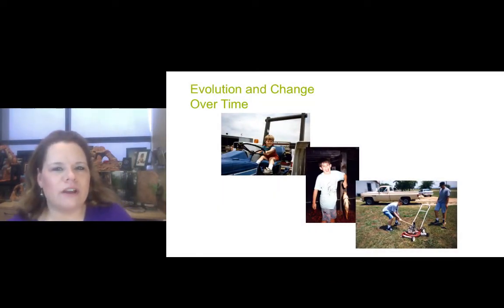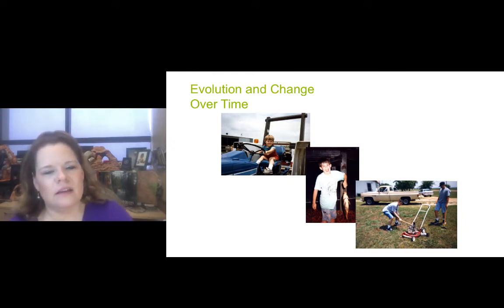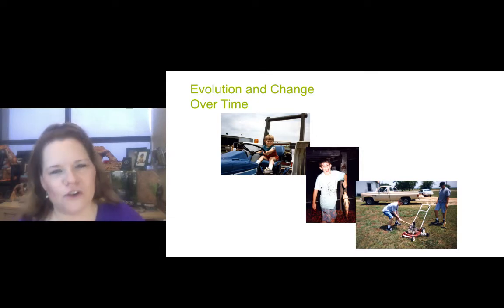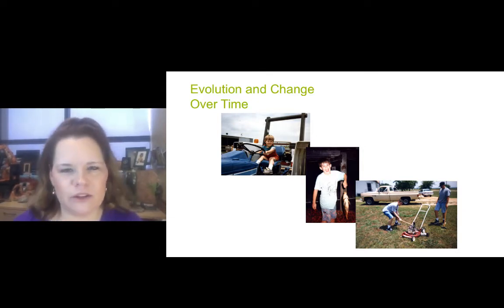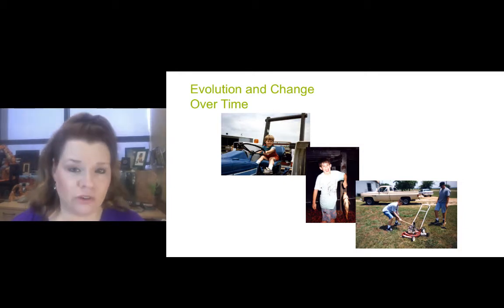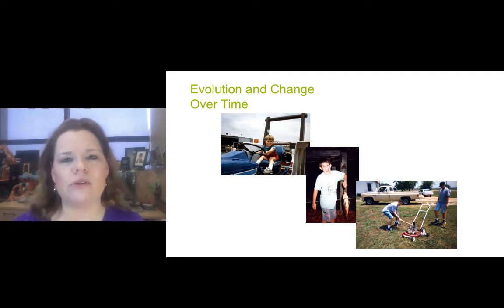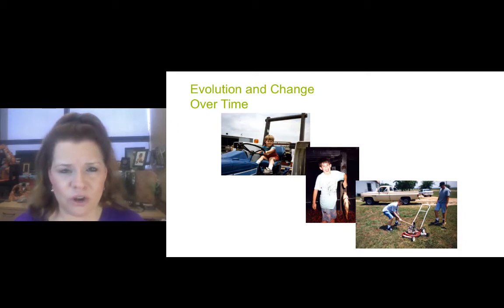So this is Brad Turner — as a little kid on the left, a medium kid in the middle, and now as an adult on the right. He's a co-author of the book and a very good friend of mine. Ask him why he's nicknamed Lucky — that's a story in itself. But there is change over time. As he reproduces and has two girls, his genes have been passed on. The success of the Turner family being able to reproduce since he's an only child will depend on if those children are able to reproduce. In any line of species, that's a critical component of evolution.